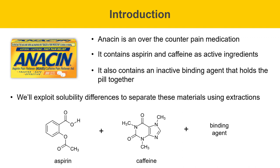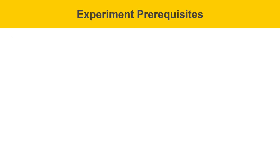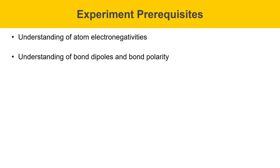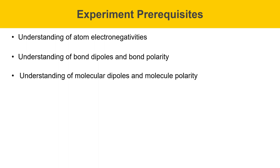We'll exploit solubility differences between these materials to separate them using a series of extractions. Some experiment prerequisites include having an understanding of atom electronegativities, which is important because it helps with an understanding of bond dipoles and bond polarities. That in turn is important for understanding molecular dipoles and molecule polarity.